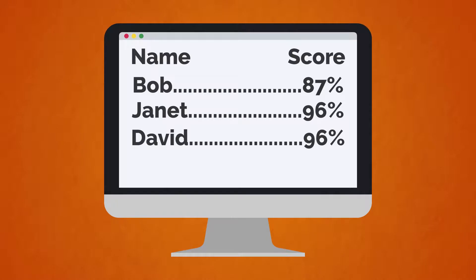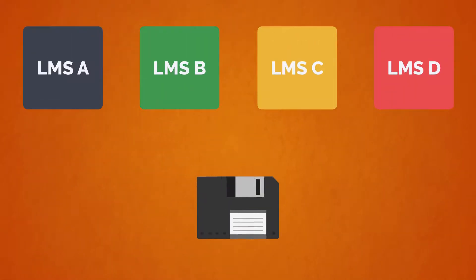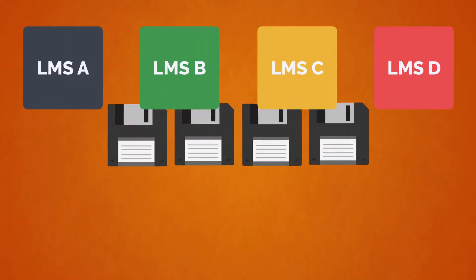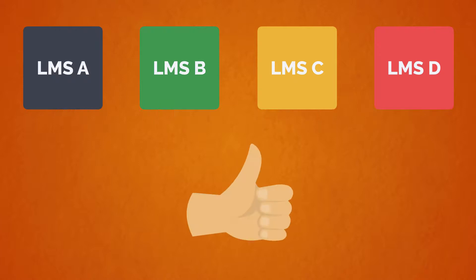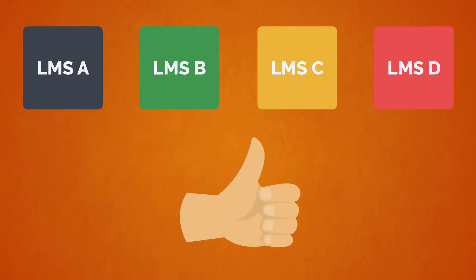that module will set the success criteria for the course and then communicate if that criteria is met to the LMS. The benefit to having a set standard like SCORM is that when one of those modules is loaded into an LMS, the administrator can be confident that the course will work and that the data the module shares with the LMS will align with how the LMS collects and shares data with administrators.